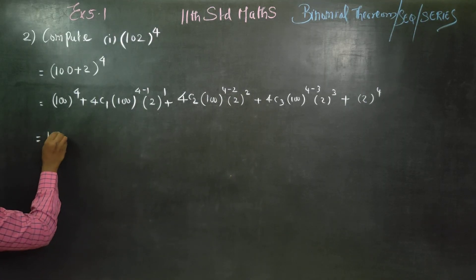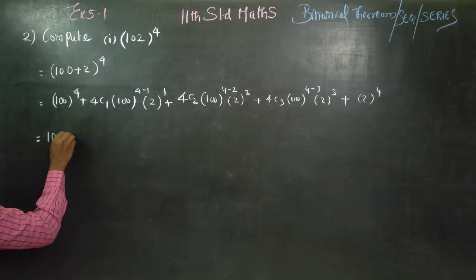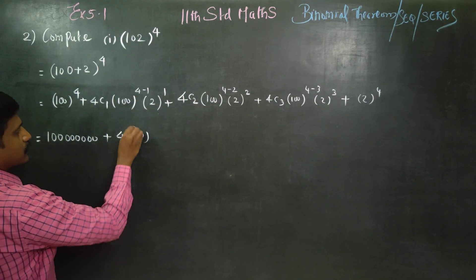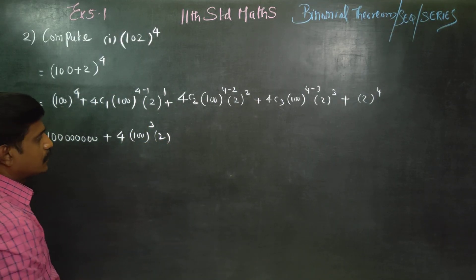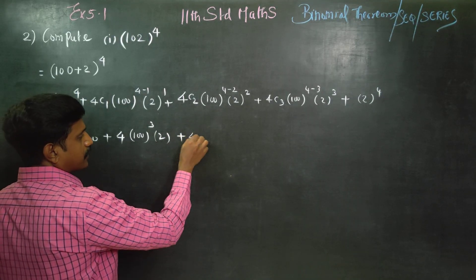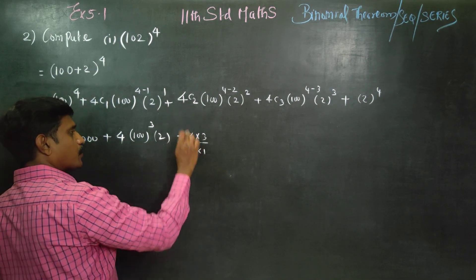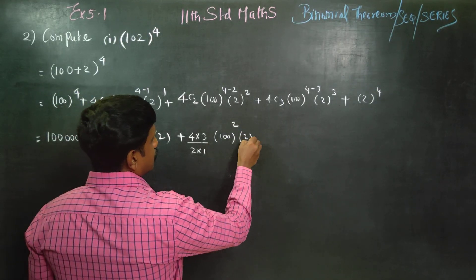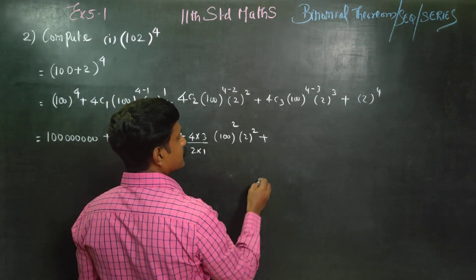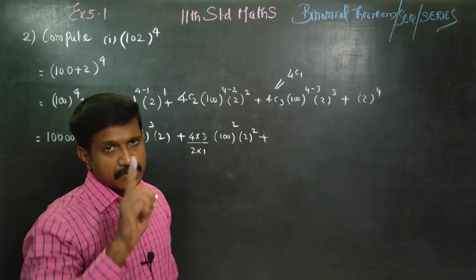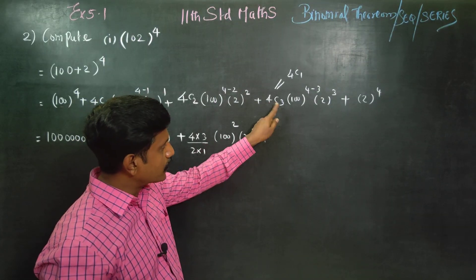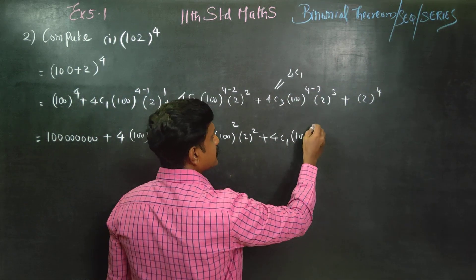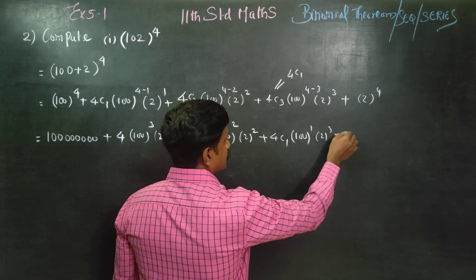Now substituting values: 100^4, then 4C1 × 100^3 × 2^1 gives 4 × 100^3 × 2. Then 4C2 can be written as (4×3)/(2×1) = 6, so 6 × 100^2 × 2^2. Then 4C3 equals 4C1 = 4 by the combination property, giving 4 × 100^1 × 2^3, plus 2^4.